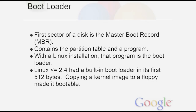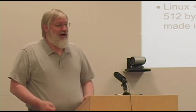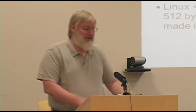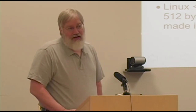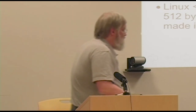The first sector of a partition or disk is called the Master Boot Record. It contains the boot code and, on a hard drive, information about the partition table. Linux up through kernel version 2.4 actually had a boot loader built into the kernel image — copying the kernel to a floppy automatically made it bootable because that first 512 bytes was a built-in boot loader. Since 2.4 there's no longer a built-in boot loader, so you always need a separate boot loader.